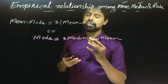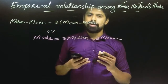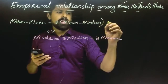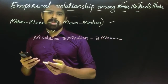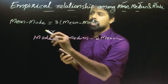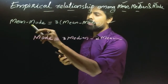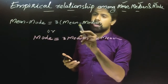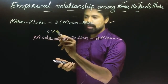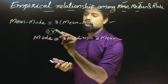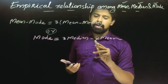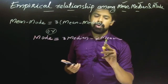Let's do another example and try two formulas. Formula one: mean minus mode is equal to 3 into mean minus median. Formula two: mode is equal to 3 into median minus 2 into mean.